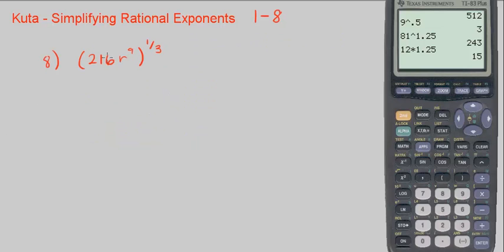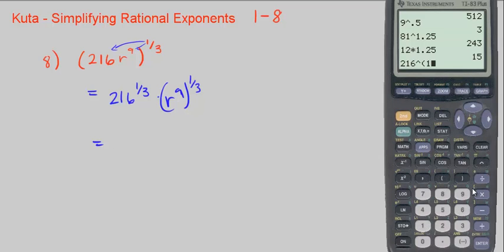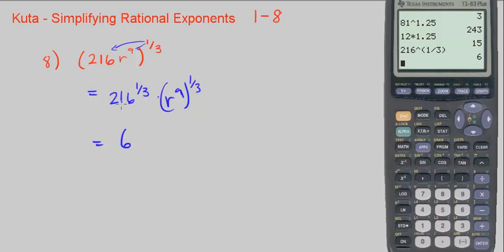And finally, number 8: 216r to the 9th, to the 1 third power. We distribute to every term: 216 to the 1 third times r to the 9th to the 1 third. 216 to the 1 third is the cube root of 216 — let me plug it in — which is 6, since 6 times 6 times 6 equals 216. r to the 9th to the 1 third means 9 over 1 times 1 over 3 equals 3, so we get r cubed. This is the end of Kuta simplifying rational exponents 1 through 8.